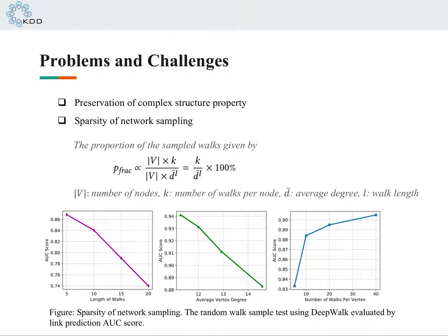According to this equation, obviously when L or d increases, the sampling fraction of walks is getting smaller, thereby the trained model is prone to overfitting because of the sparse input. On the contrary, if the number of samples increases, the performance is getting better. Therefore, it is desirable to develop effective models with better capabilities of generalization on sparsely sampled walks.